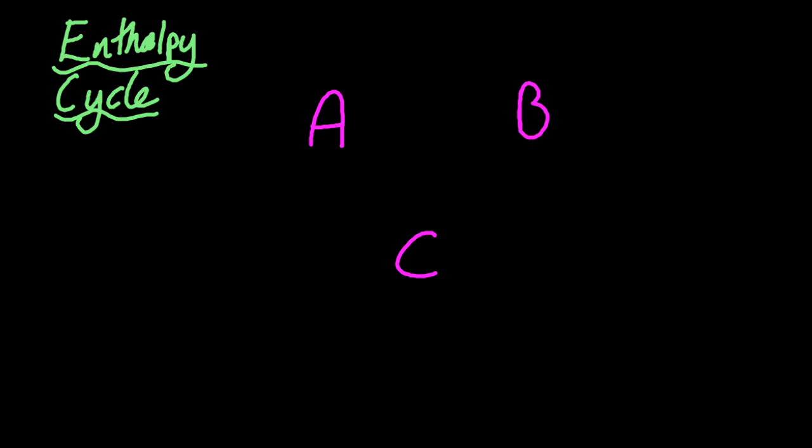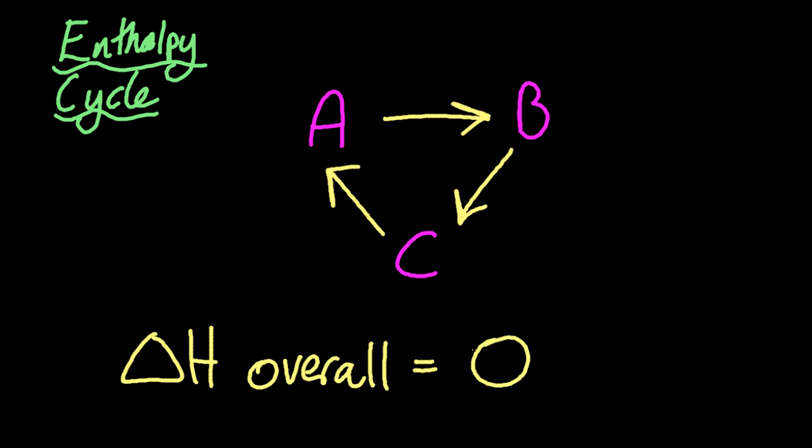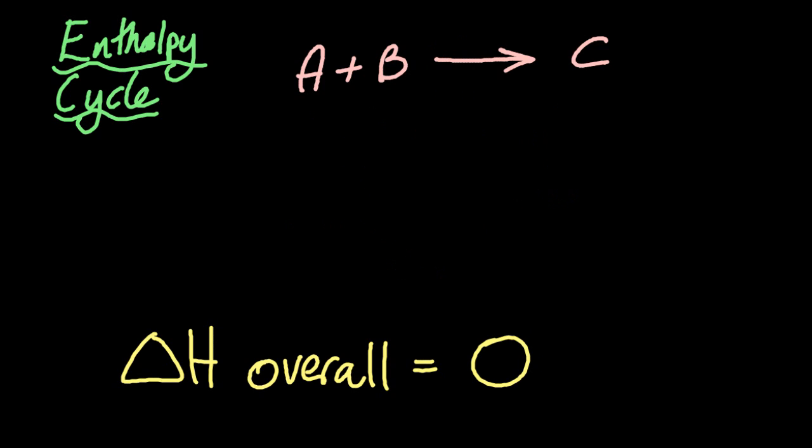The second way to apply Hess's law is with an enthalpy, or energy cycle. Many people don't like these. So if A turns to B, and B turns to C, and C turns to A, delta H overall for that process is zero. So if we put some numbers in, for delta H, they've all got to add up to zero for that process.